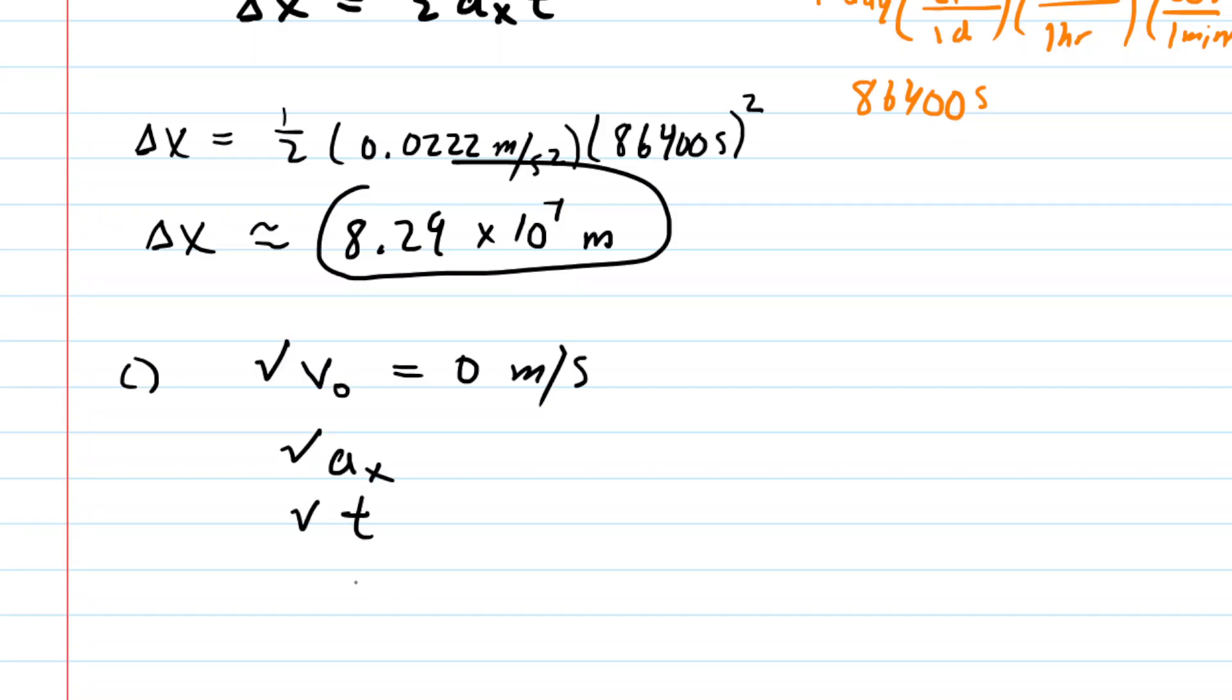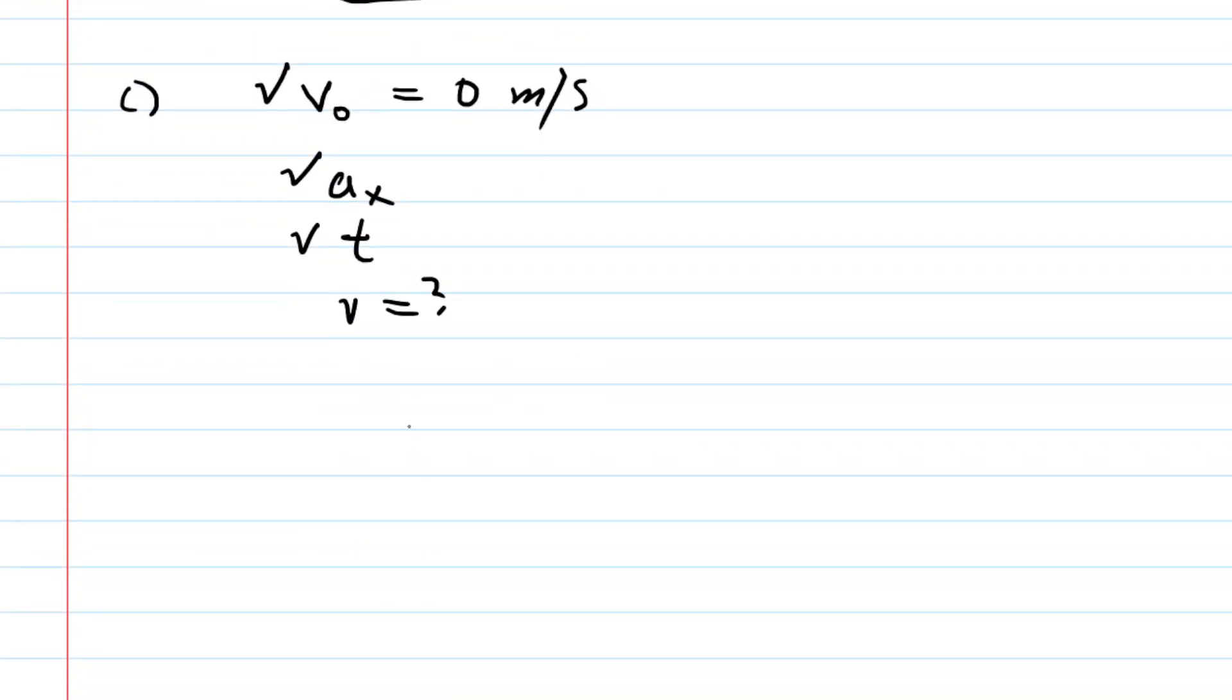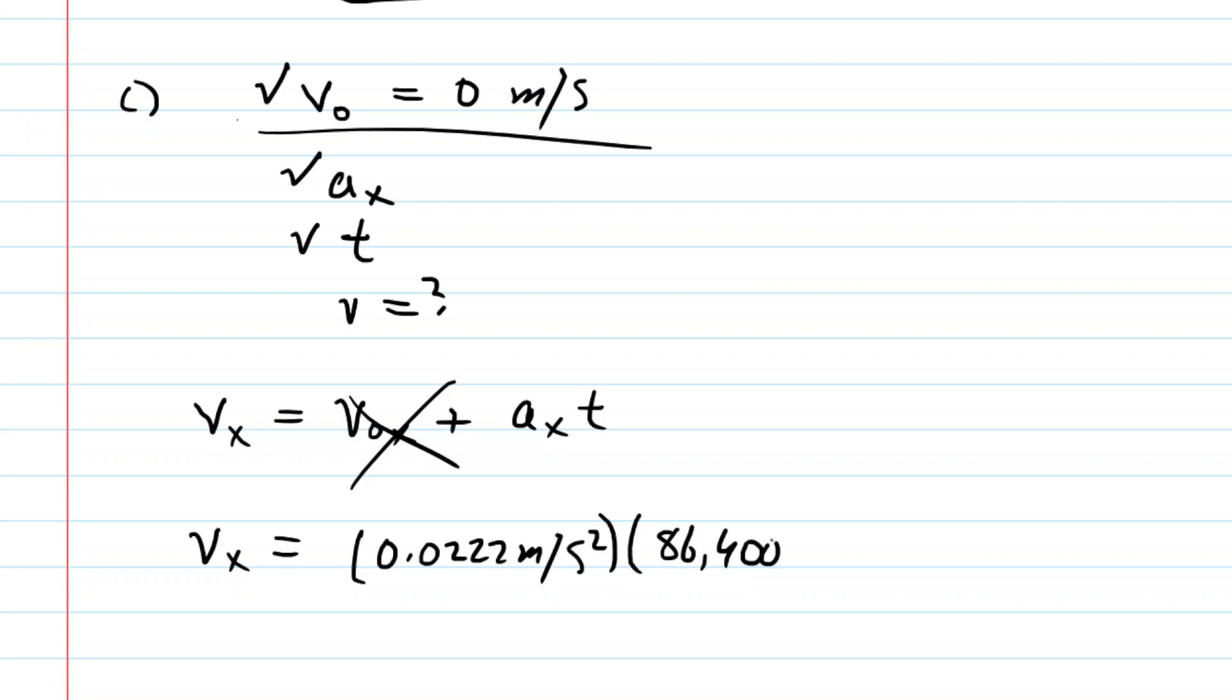Going back to kinematics, the final velocity in the X direction equals the initial velocity plus the acceleration multiplied by time. The initial velocity is 0, so we just take the acceleration calculated in Part A and multiply that by the time determined in Part B.